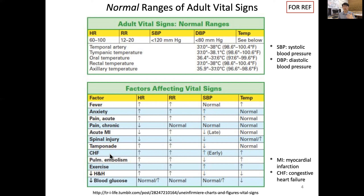Another example is congestive heart failure, a condition where the heart is too weak to meet the body's normal demands. In this case, heart rate goes up to compensate, and respiratory rate is also higher. These examples show why measuring and understanding vital signs is important as a first line of assessment for the patient.